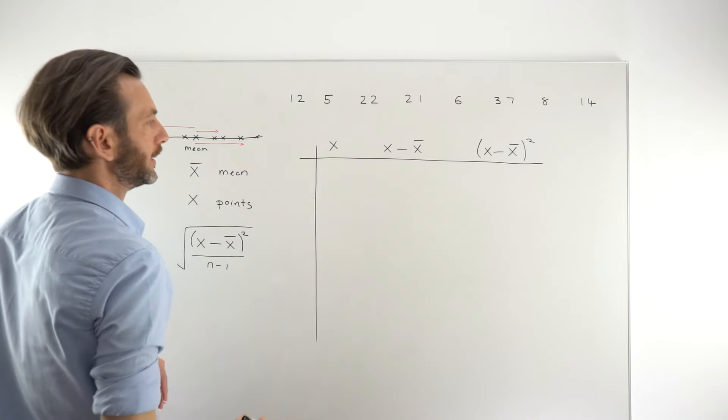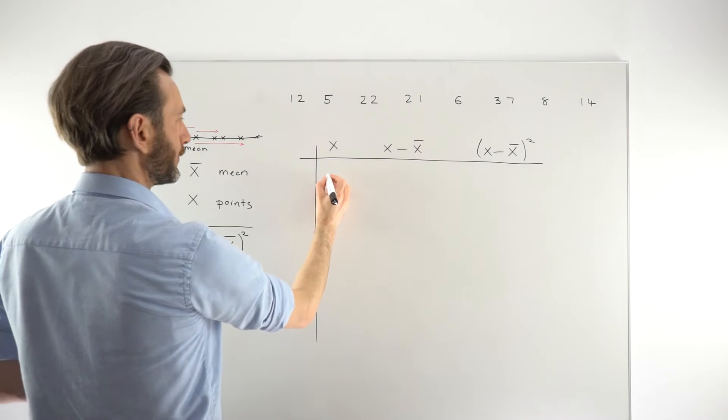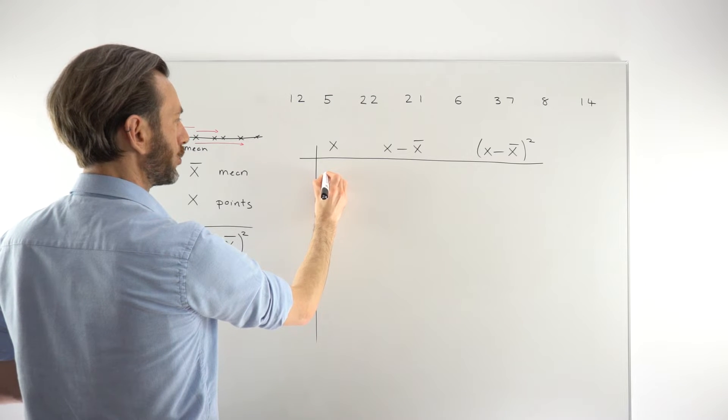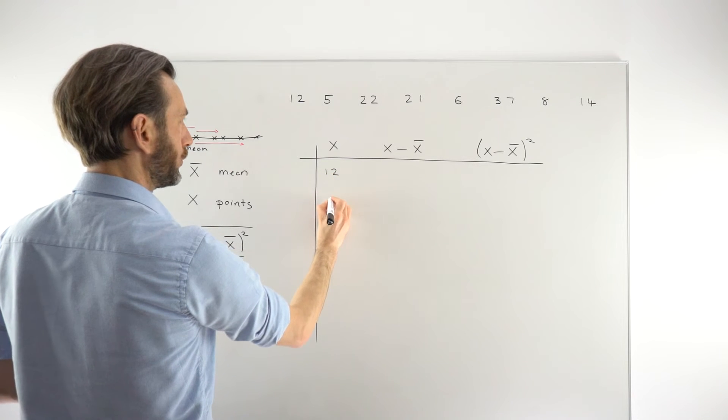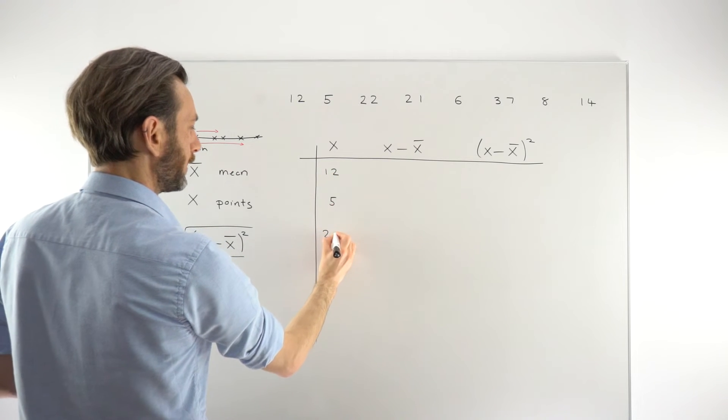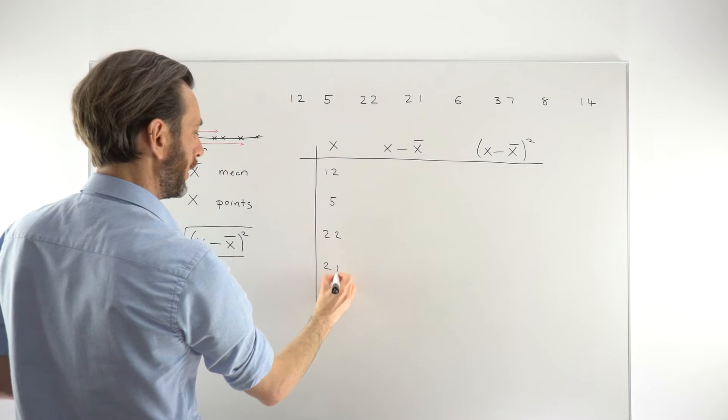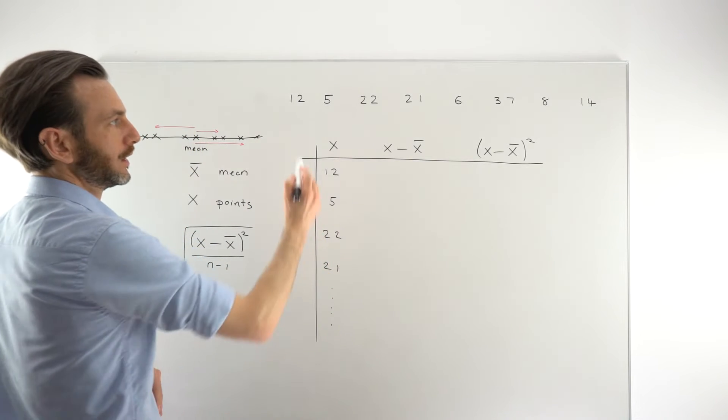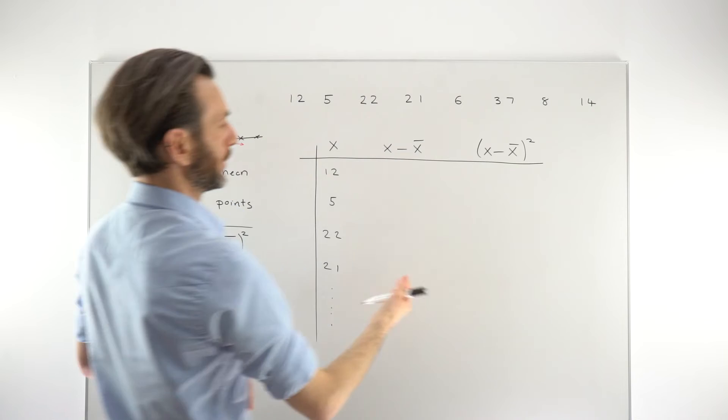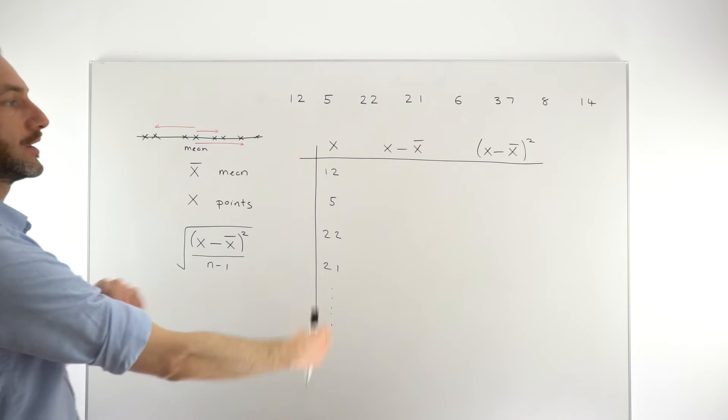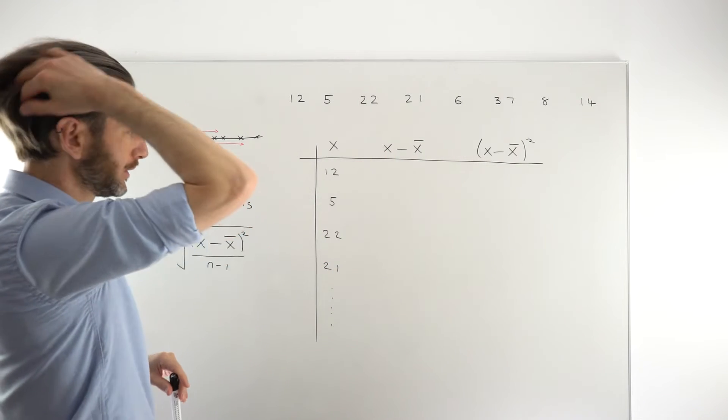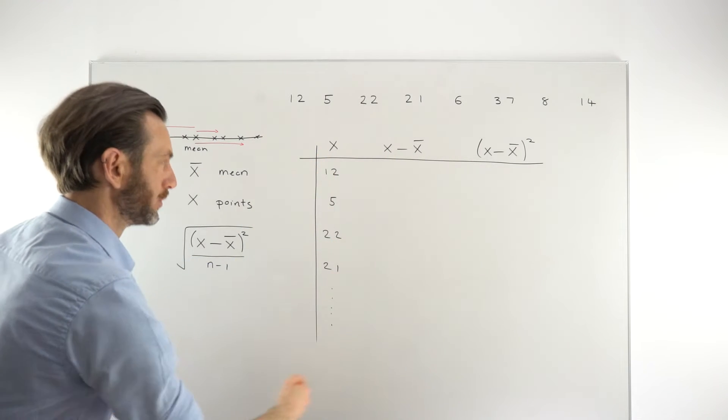So we're just putting all the X values in the first column. They don't need to be in numerical order for this. So we would go 12, 5, 22, 21, etc. Not too many data points in this set, but it could be quite a large data set. You just need to draw a big enough table. So we just basically start to populate all the numbers down there.